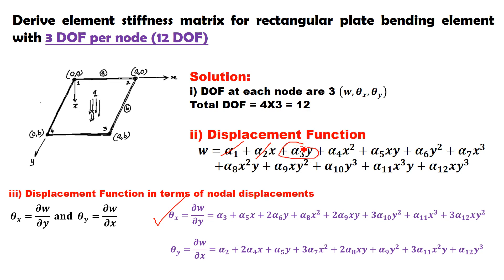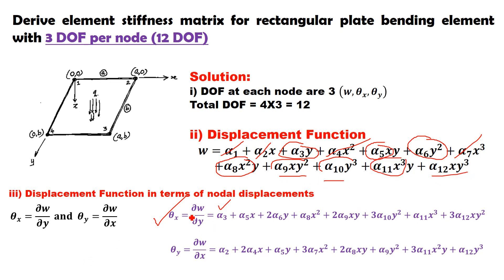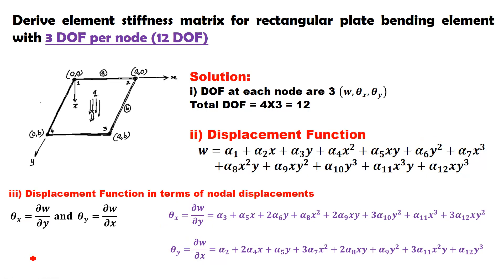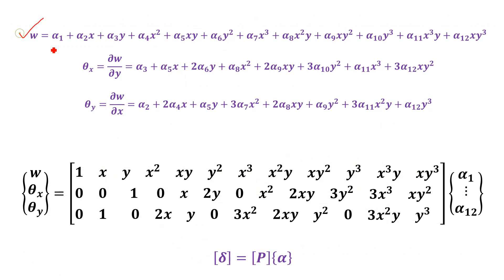Continuing the differentiation of W with respect to y to get θx: the derivative of α3·y gives α3; the x² term gives 0; then α5·x; then 2α6·y; the x³ term is 0; then α8·x²; then 2α9·xy; then 3α10·y²; then α11·x³; and finally 3α12·xy². This gives the θx expression. Similarly, differentiating W with respect to x yields θy. So the 3 degrees of freedom per node — W, θx, θy — are expressed as three equations.